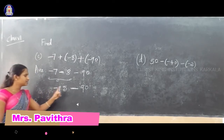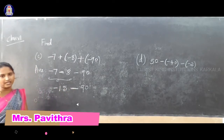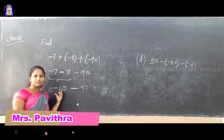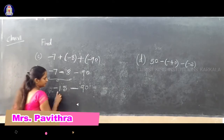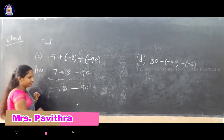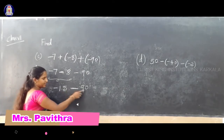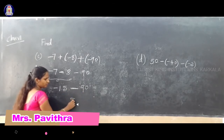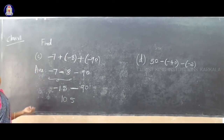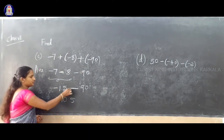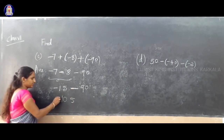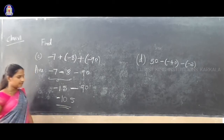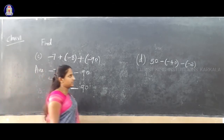So minus 15, minus 19. In this, the sign is same — minus, minus. Same sign means addition. So if you add, 90 plus 15: 0 plus 5 is 5, 1 plus 9 is 10. So the answer is 105. Which is the greater number? 90 is greater than 15, so the greater number sign is minus. The answer is minus 105.